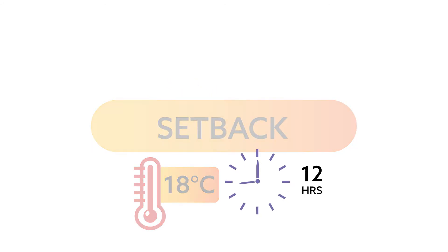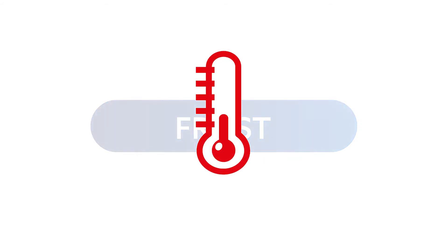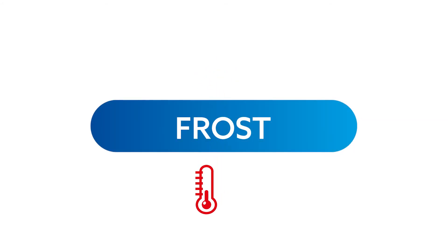If the room is empty for a longer period — typically 12 hours — the Ecostat 2 enters frost mode. The heater is turned off, the temperature drops, and then Ecostat 2 protects the room by keeping it at the preset temperature, usually around 5 degrees C.